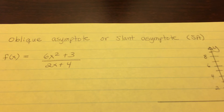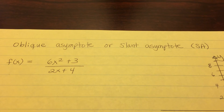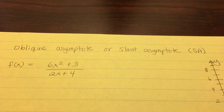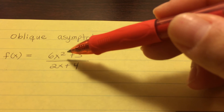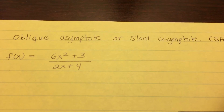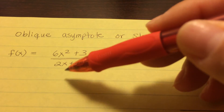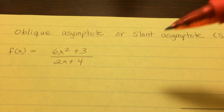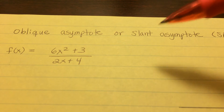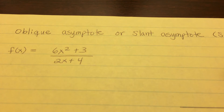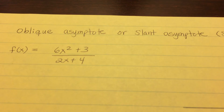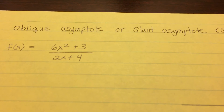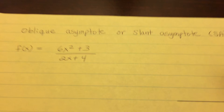The last type of asymptote is called the oblique asymptote — also known as the slant asymptote. The slant asymptote happens when the numerator power is larger than the denominator power, which is the opposite of what produces a horizontal asymptote. In this case, you can't do a simple comparison like with horizontal asymptotes — instead, you use polynomial long division.